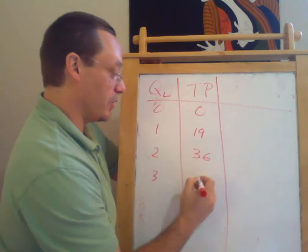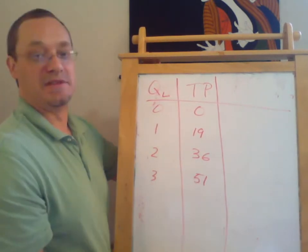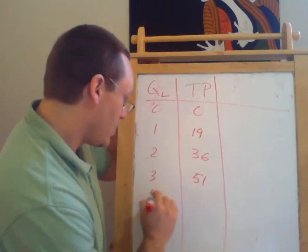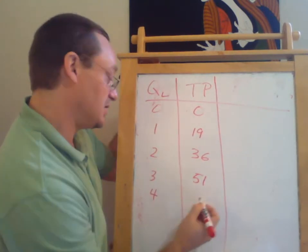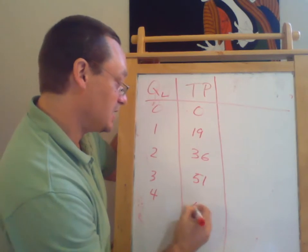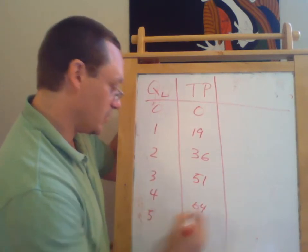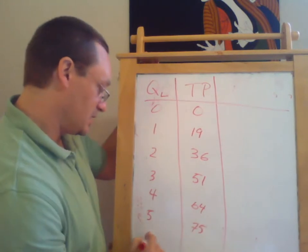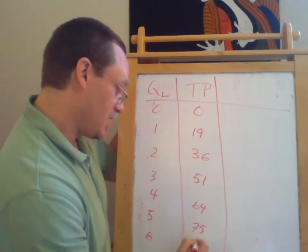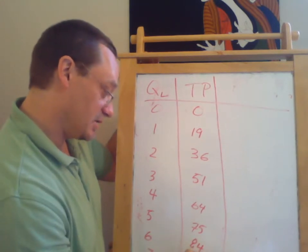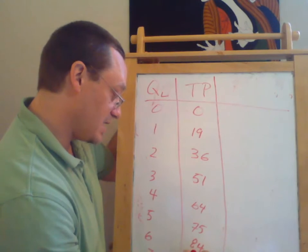If we have three workers, say we produce 51. I don't know, this is like bales of hay or whatever. It doesn't really matter that much. So four workers, let's say we have 64. Five workers, 75. Six workers, 84. And seven workers, let's say we have 91.